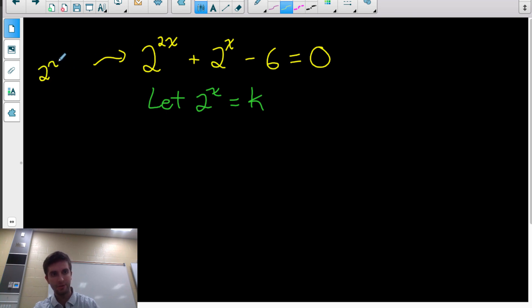This is the same thing as having 2 to the x squared, right? 2 to the x squared, multiply those exponents, it's 2 to the 2x, so this is the same as that. So if I were to go ahead and replace all my 2 to the x's with k, I would have k squared plus k minus 6 equals 0.